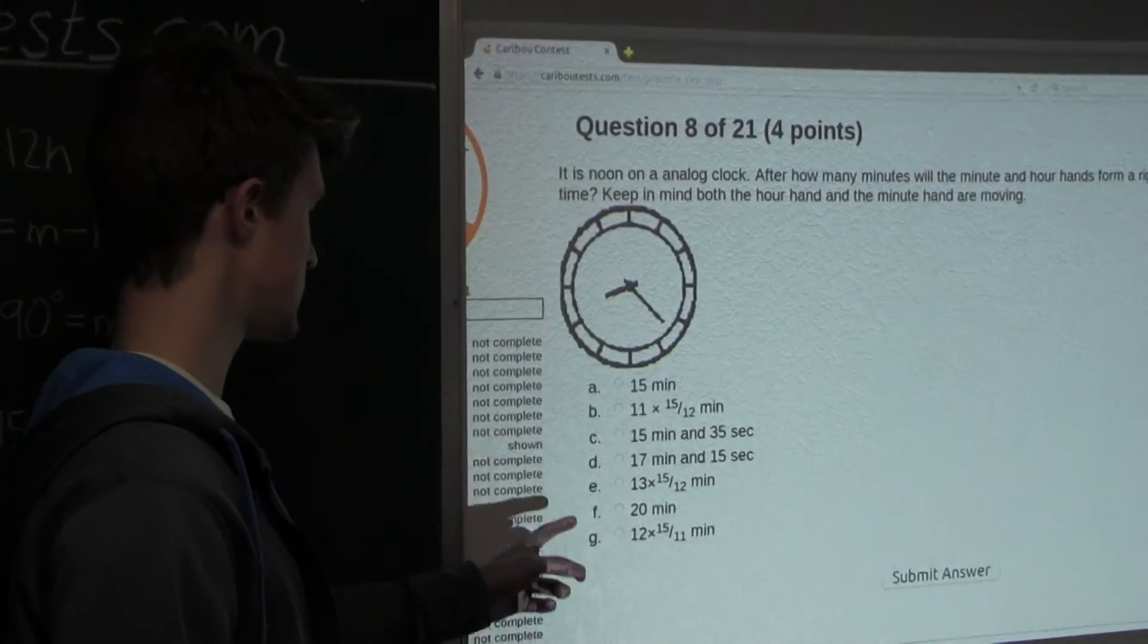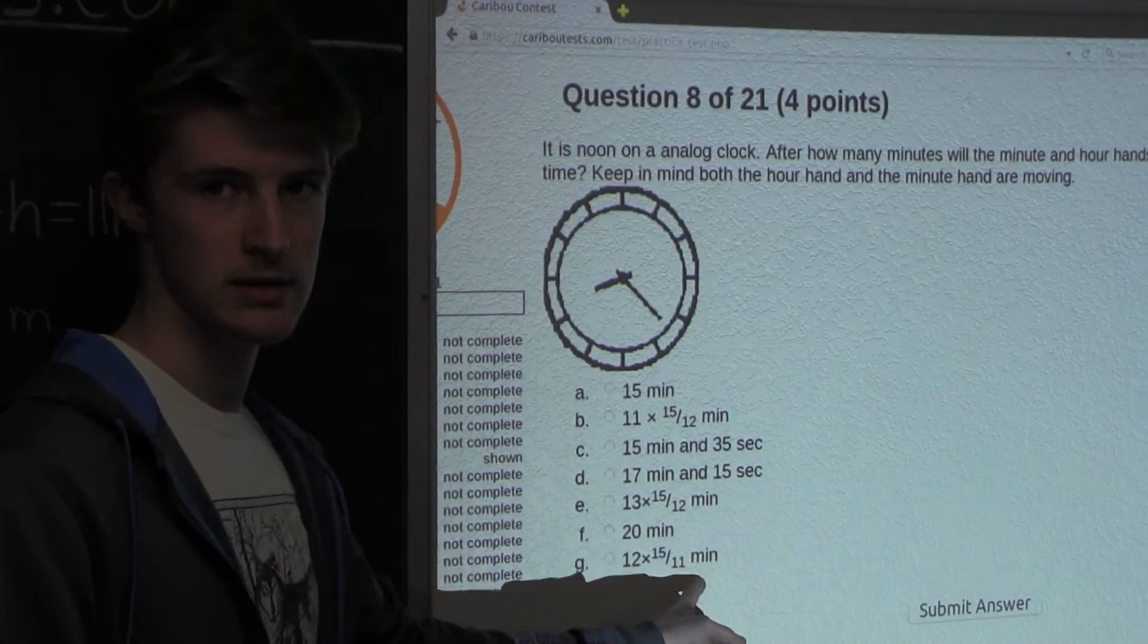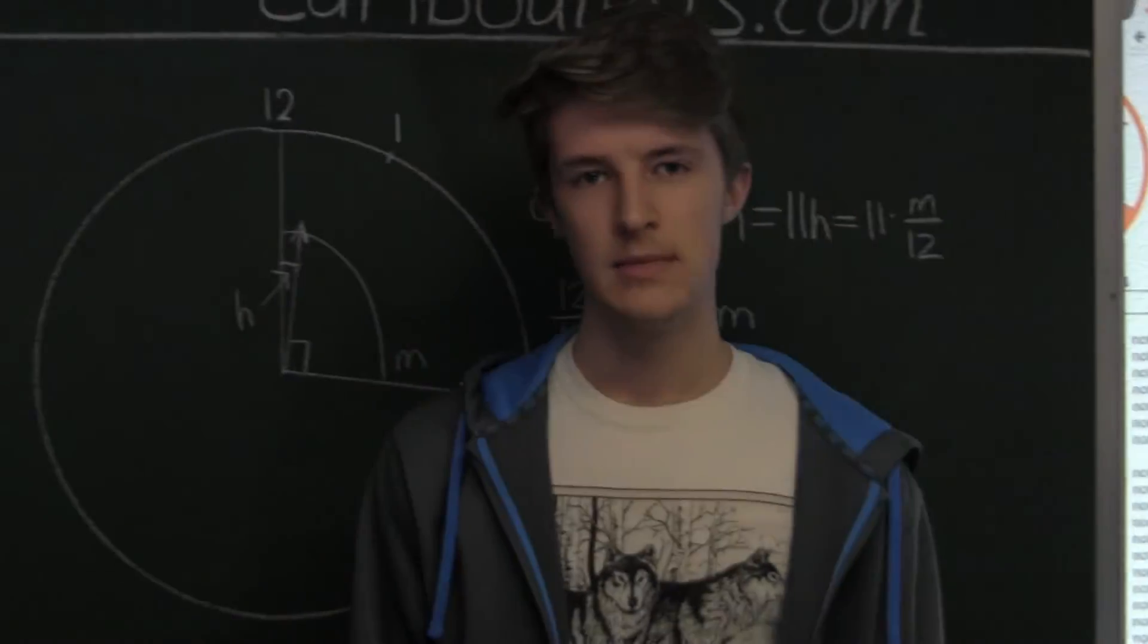And this is equal to the time that it will take for the minute hand to move such that the two hands form a right angle. Therefore, the answer is option G, twelve times fifteen over eleven minutes.